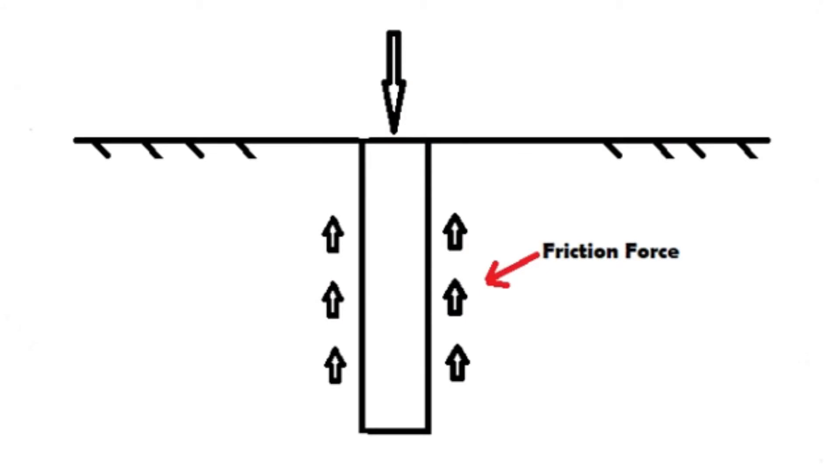The second type is friction piles. These use the frictional resistance between the outside surface of the pile and the soil it extends through. The capacities of friction piles aren't as high as end bearing piles, but they're sometimes more economical when the till or bedrock is too far below the surface, or when the loads are lighter and shallow footings aren't the preferred option.